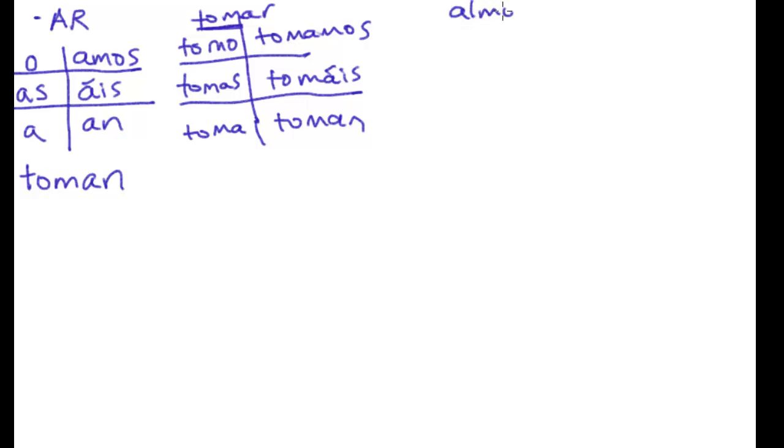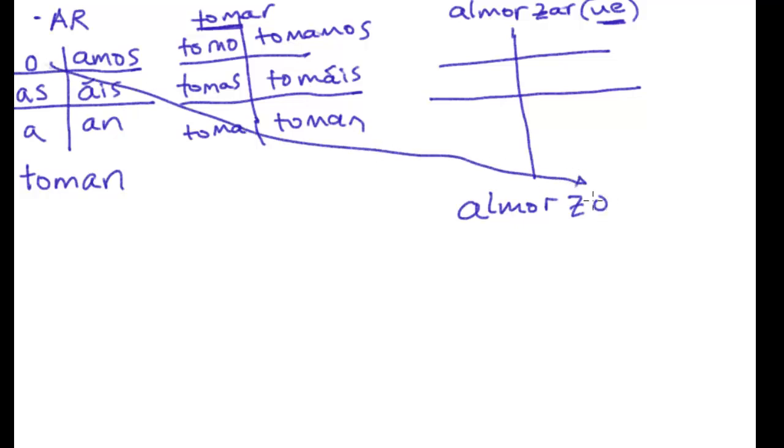An example of a stem-changing verb is, por ejemplo, almorzar. Almorzar is to eat lunch or just to lunch. To show you that it's stem-changing, I would write entre paréntesis O→UE. If I conjugate almorzar la forma yo, it ends in -o, pero esto no es el verbo.